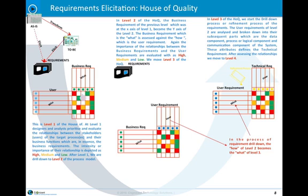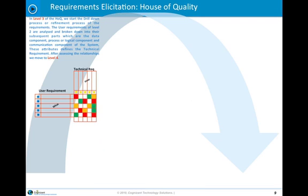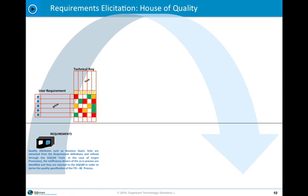The next drill down takes the technical requirements and transforms those. So we now go to what we call a level 4. But before we do that we introduce the notion of the goal quality indicator matrix and what that is about is the elicitation of non-functional requirements.